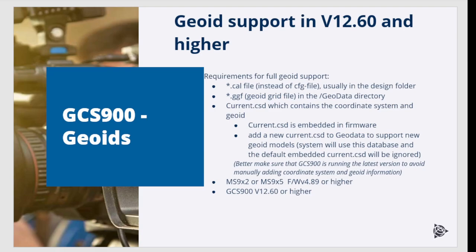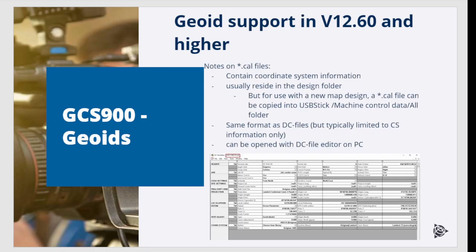The MS receivers must run the indicated minimum firmware versions, and MS 990 receivers are no longer supported. CAL files are required for full GeoEat support and usually reside in the design folder. They contain coordinate system information, including a GeoEat grid reference, but not the GeoEat grid itself.